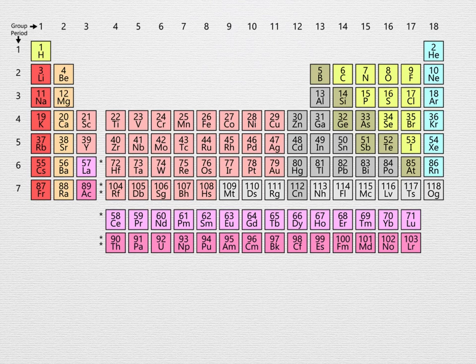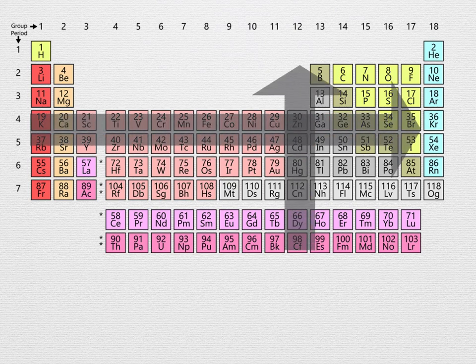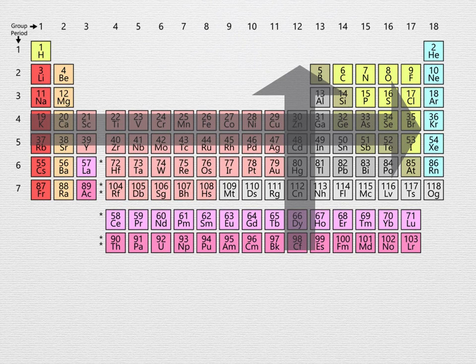Trends in electronegativity arise in the periodic table of the elements. General chemistry students need to know the main trends. Electronegativity tends to increase as you move left to right across the table, and as you move from the bottom to the top. Again, this is a tendency. You may find exceptions.